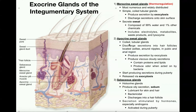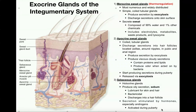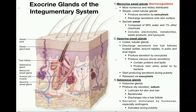Sebaceous glands, like apocrine glands, have their activity stimulated by androgens such as testosterone, so they become most active during puberty. As testosterone levels go up during puberty, sebaceous glands also have receptors for testosterone, which increases their activity. This is why people typically start seeing oilier skin when they first enter puberty — it is due to the increased activity of sebaceous glands.